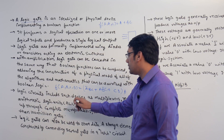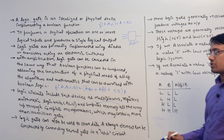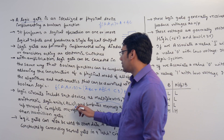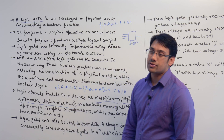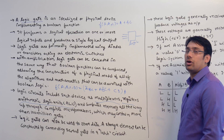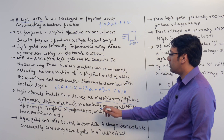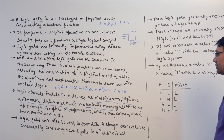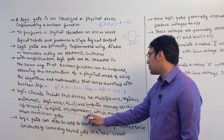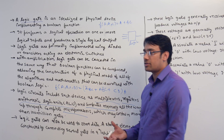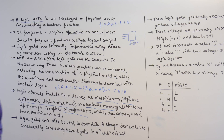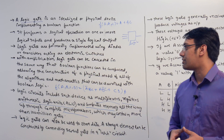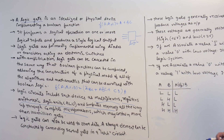Logical circuits include devices such as multiplexers, registers, and the arithmetic logical unit (ALU), which performs all arithmetic and logical operations in the computer system. We also study computer memory like RAM and ROM. ROM is implemented using logical circuits, and most microprocessors are implemented using logical circuits. The number of logic gates a circuit contains determines whether it is small scale, medium scale, large scale, or very large scale integration.